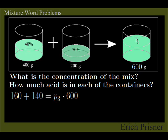Therefore, 160 plus 140 equals P3 times 600, or P3 equals 300 over 600, which is 0.5, 50%. The result is indeed 600g of a 50% acid solution.